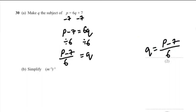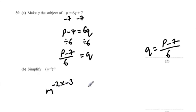Question 30B: simplify (m⁻²)⁻³. Using the indices rule, multiply the powers together: negative 2 times negative 3 equals 6. So the final answer is m⁶.